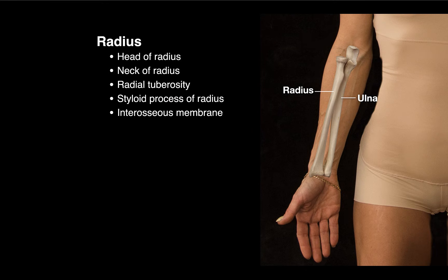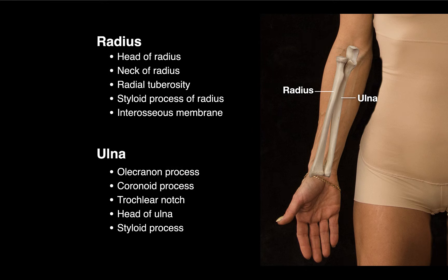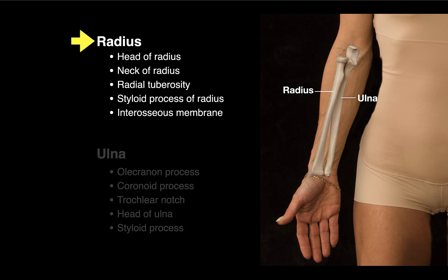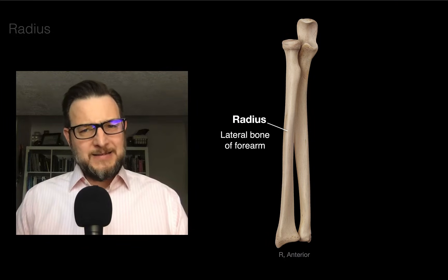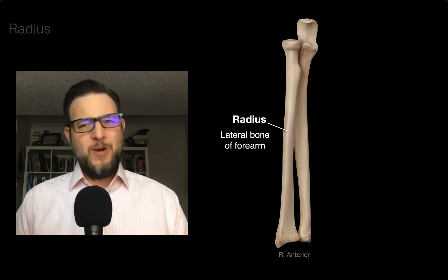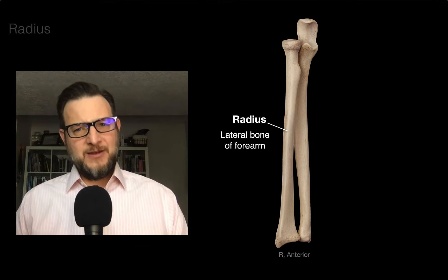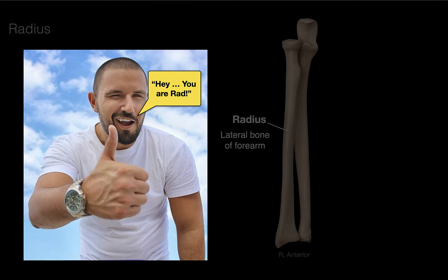These are the radial and ulnar landmarks that I'm going to cover in this tutorial. Let's start with the radius. The radius is the lateral bone of the forearm. The way I find that in surface anatomy is: someone says 'you are rad' and gives you the thumbs up — the radius is on the rad thumb side.